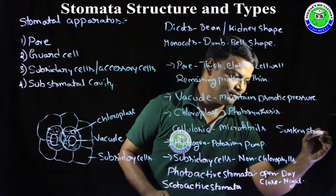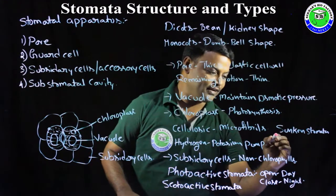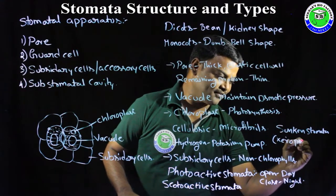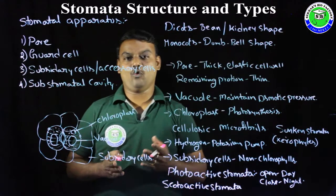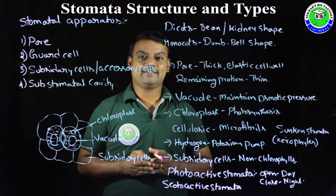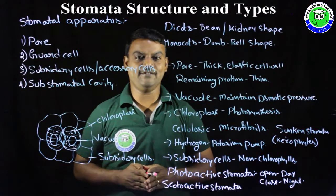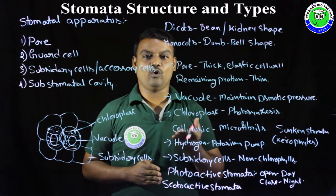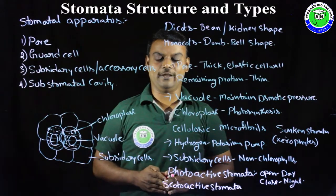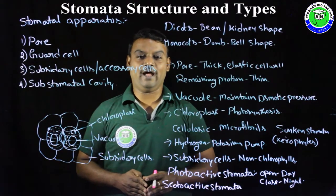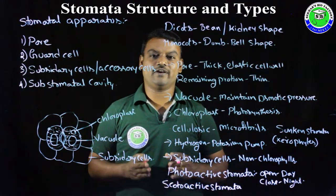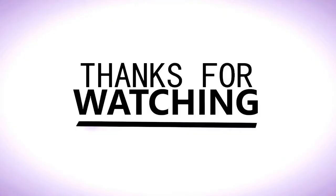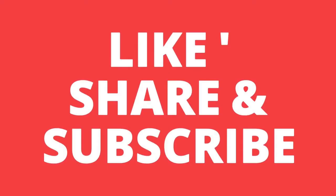Sunken stomata are present in xerophytes. In hydrophytes, especially those with floating leaves, stomata are present on the upper surface only, with no stomata on the lower surface. In this way we can observe the structure of stomata and the types of stomata based on different characters in different plants.